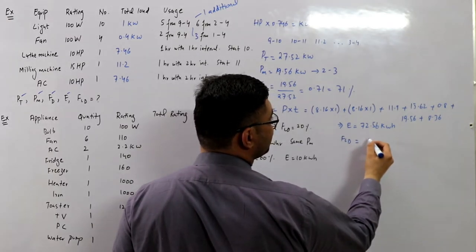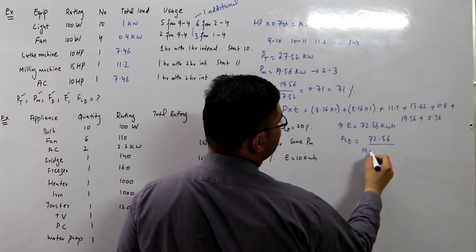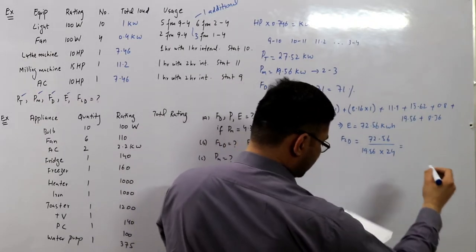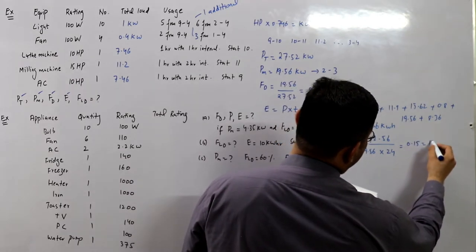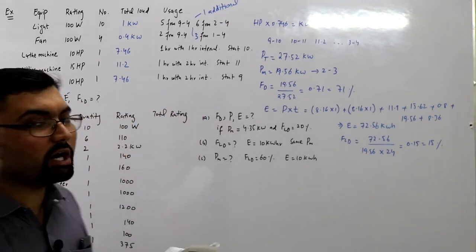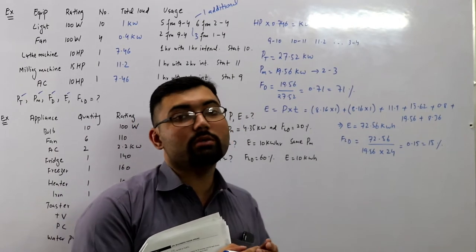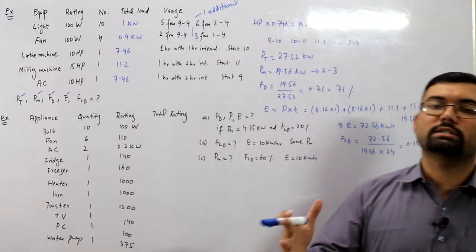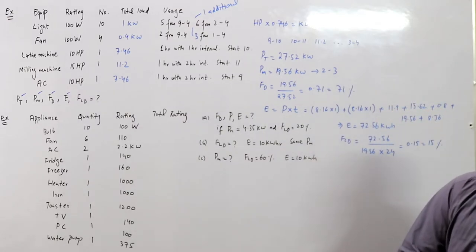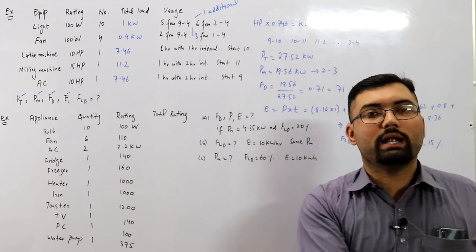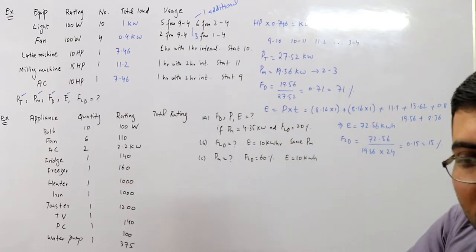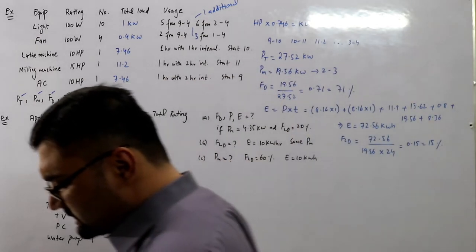The load factor fld = e / (pm × t). So e = 72.56, pm = 19.56, t = 24 hours for daily calculations. This gives 0.15, or 15 percent. This is low because electricity is only used from 9 to 4, meaning for 17 hours the electricity is not being used. This shows uneven usage - you have load at some intervals and no load for the rest, which is not ideal.